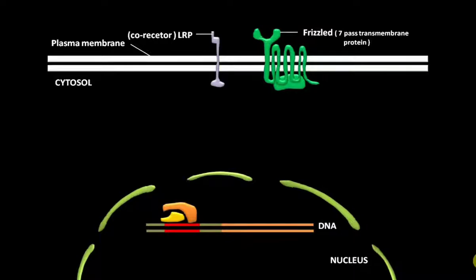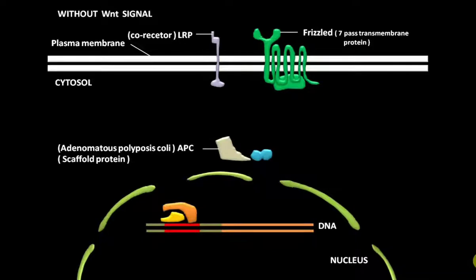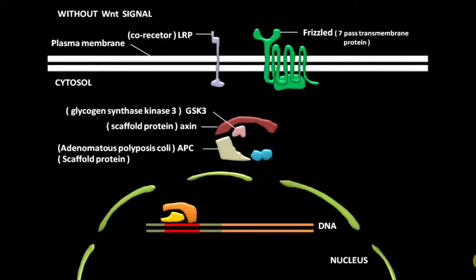In the absence of a Wnt signal, the cytosolic beta-catenin becomes bound by a degradation complex containing the scaffold protein APC (adenomatous polyposis coli), the scaffold protein axin, GSK3 (glycogen synthase kinase 3), and CK1 (casein kinase 1).